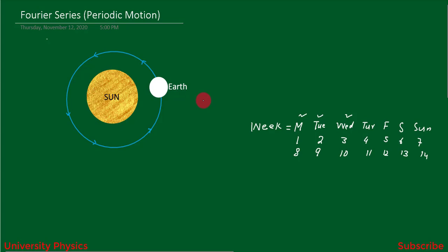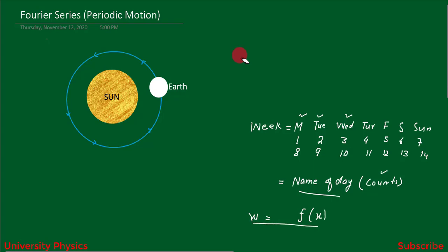In this situation we have two things: the name of the day and the count or number. The counts are increasing, but the name of the day repeats itself. So if we represent the week in terms of mathematics, the name of the day is the harmonic function F, and the count is X. This is the mathematical representation of a week — the days repeat themselves after equal intervals of time.